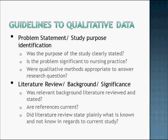When you're looking for the purpose, you want to ask: was the purpose of the study clearly stated? Is the problem significant to nursing practice? And were the qualitative methods appropriate to answer the research question? For the literature review, you need to ask yourself: was relevant background literature reviewed and stated? Are the references current? And did the literature review state plainly what is known and not known in regards to the current study?